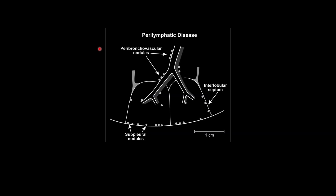Remember that the nodules in sarcoid have a perilymphatic distribution, which means that they favor the pleural surfaces and the bronchovascular bundles. In the case of a pseudoplaque, there are so many nodules clustered on the pleural surface that it mimics the appearance of a pleural plaque.